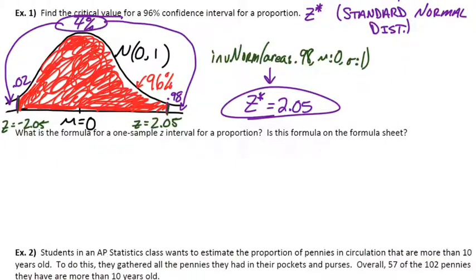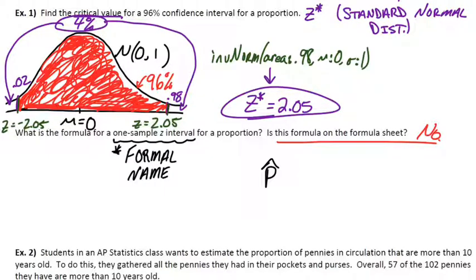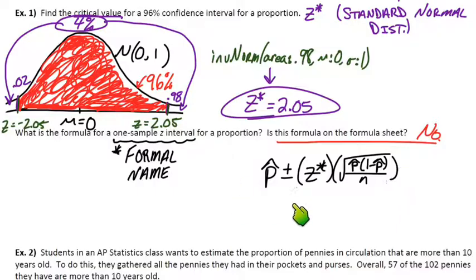So the next part here says, what is the formula for a one sample z interval for a proportion? I want to make a note here. A one sample z interval for a proportion, that's really the formal name of this confidence interval. And we'll see other formal names for means in different types of intervals as we go along. The formula is actually not on the formula sheet and we've already gone through it here once. It's p-hat, our point estimate, plus or minus our critical value times the standard error of our statistic. So that is the actual formula. However, it's not on the formula sheet.